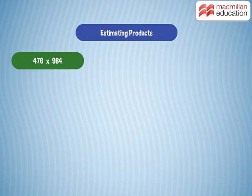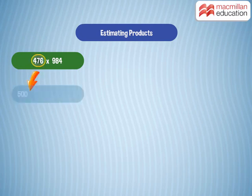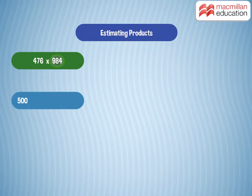Let us round off the first multiplier. 476 can be rounded to its nearest hundred and written as 500. Similarly, 984 will become 1,000. Multiply the numbers and we get 500,000, which is the estimated product.